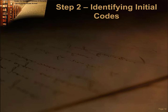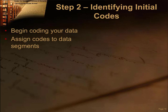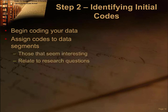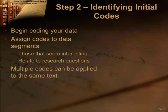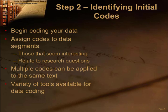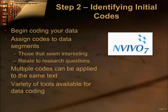Step 2: Identifying Initial Codes. Codes are assigned to segments of data that seem interesting and relate to the research questions. A code may be tagged to a word, a phrase, a sentence, or some larger segment of text. Text can have multiple codes. Codes are the basic stepping stones to the development of themes. At first, you'll want to code for many possible themes. Coding can be done manually, with word processing, or with specialized qualitative analysis tools such as QSR NVivo or Atlas TI.